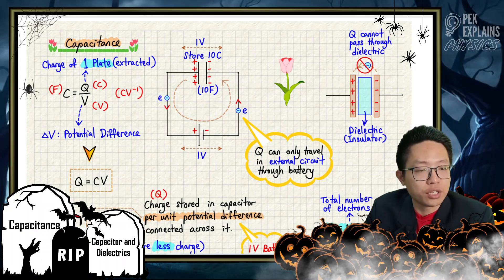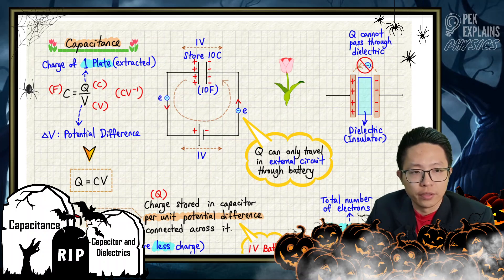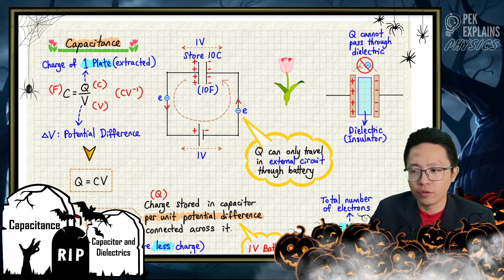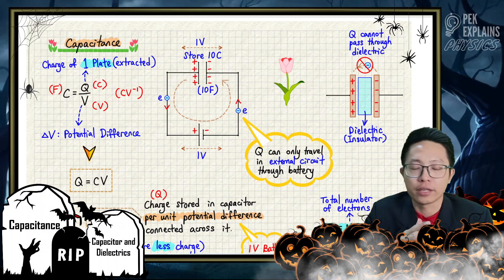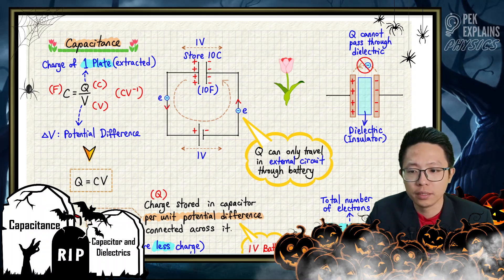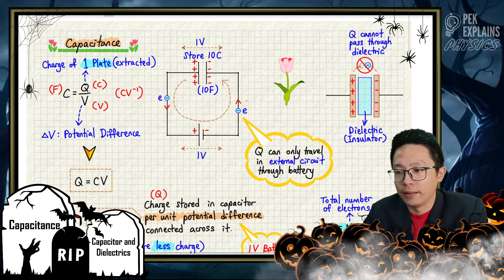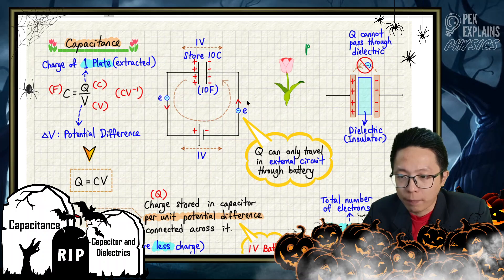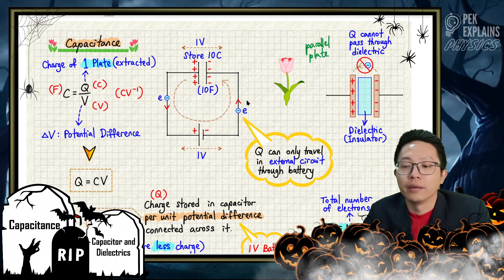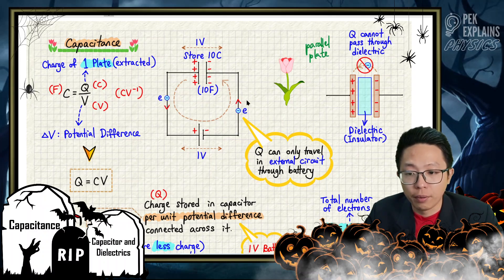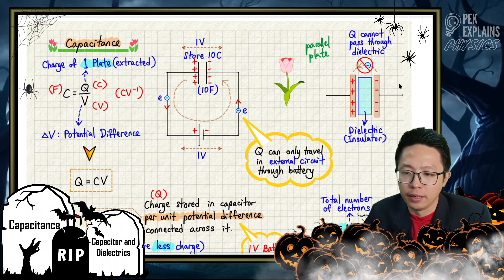Let us start the new chapter called the Capacitor and Dielectrics. The first topic is about capacitance. Before we talk about capacitance, what is actually a capacitor? A capacitor is what we have learned in the first chapter — it is actually a parallel plate, where you have a positive plate and a negative plate.